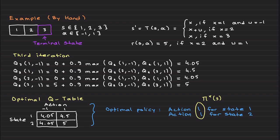Of course it's impossible to do this by hand for large state-action spaces — we use a computer for that. Looking at the Q table after convergence: for state one, the value for action plus one is higher, so argmax chooses action one — go right. For state two, the same applies — argmax chooses action one. The optimal policy is: if you are at state one, go right; if at state two, go right. The algorithm converges after the third iteration for this simple problem.